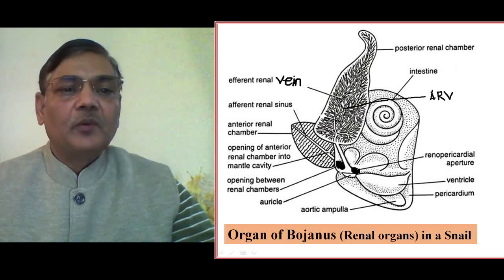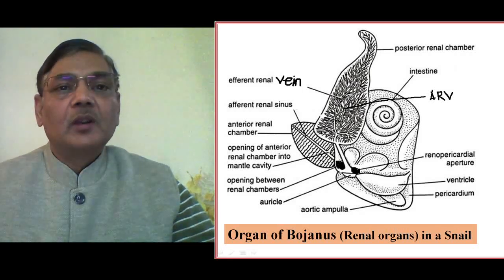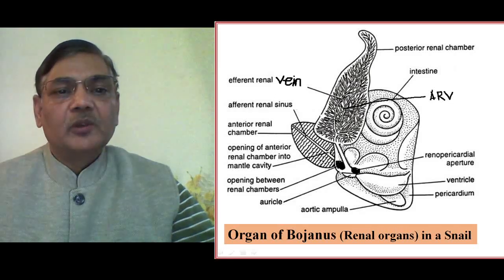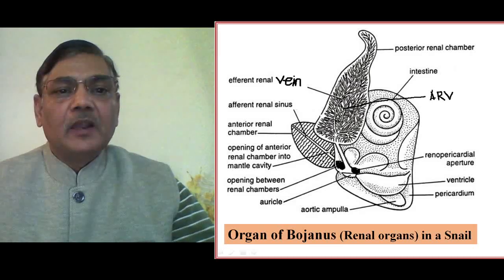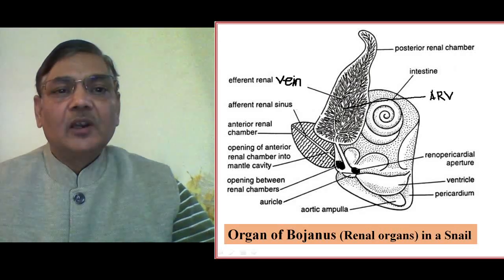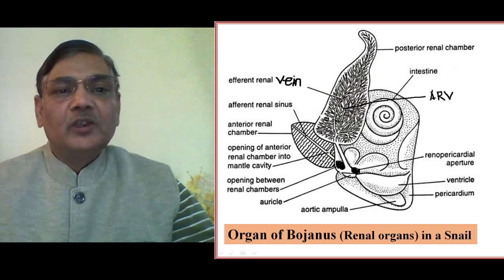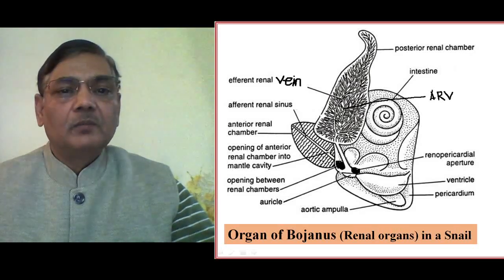Lamellae are the sites where secretion of excretory material takes place. The other structure — the posterior renal chamber — is comparatively larger, almost triangular, with a broad basal portion and a pointed upper hook-like structure, brownish in color. Internally, it is supplied with blood vessels: the afferent renal vein, which brings blood rich in nitrogenous waste, and the efferent renal vein, which carries blood free from nitrogenous waste. These two renal veins are associated with blood supply to the posterior renal chamber.